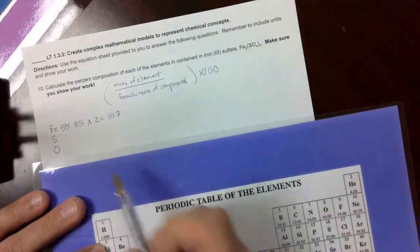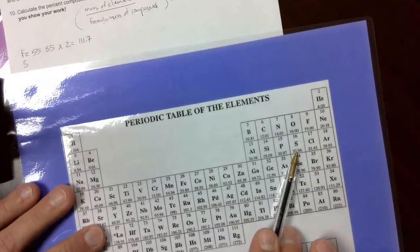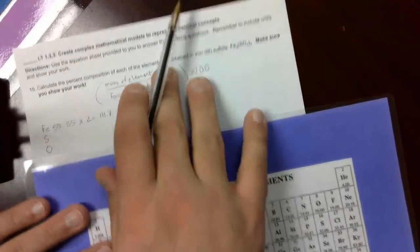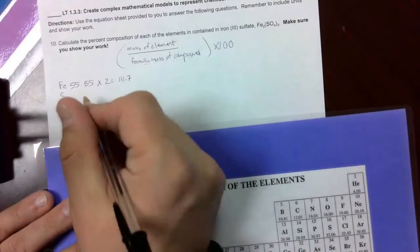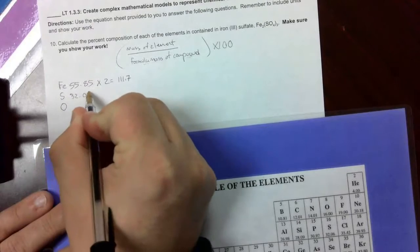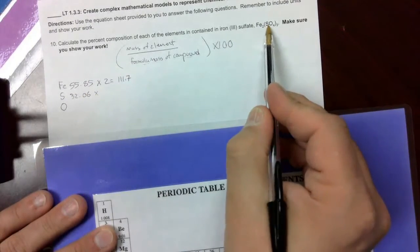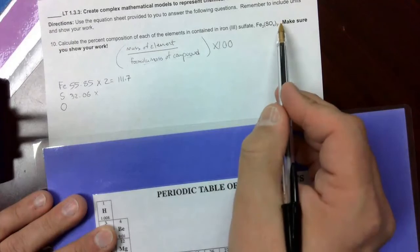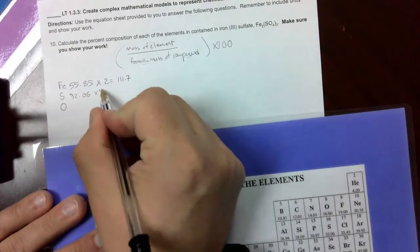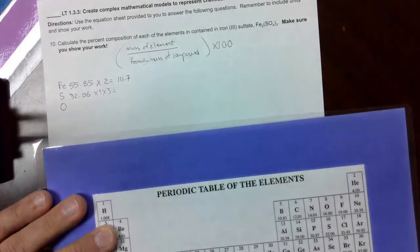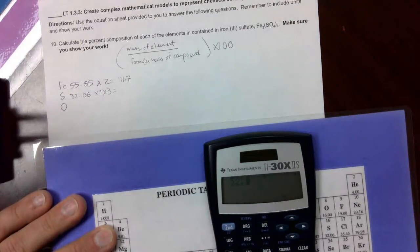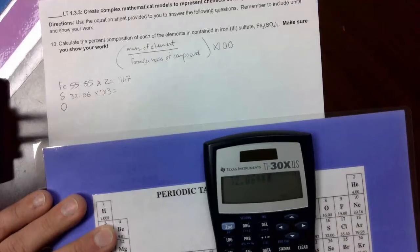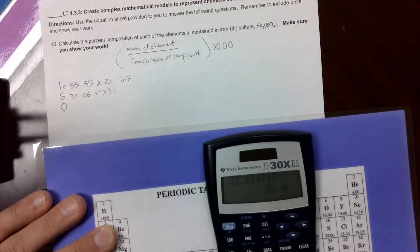We'll move on to sulfur. Sulfur's mass is 32.06. We'll multiply by 1 on sulfur, and then 3 outside the parentheses. 32.06 times 1 times 3. There we go. 96.18.